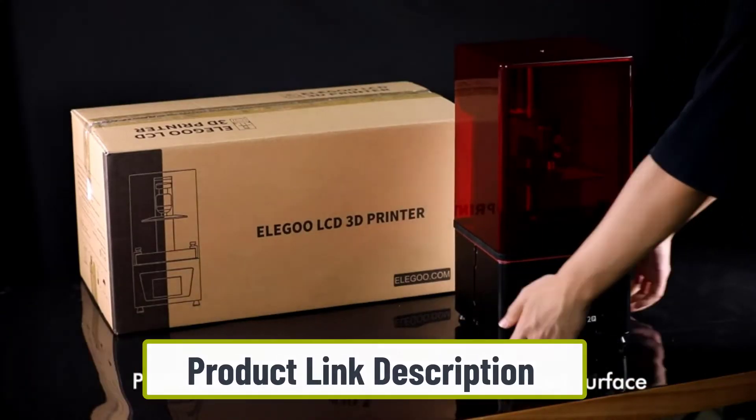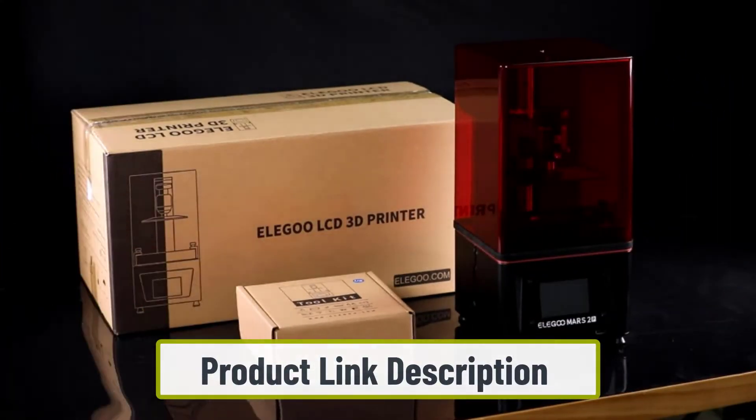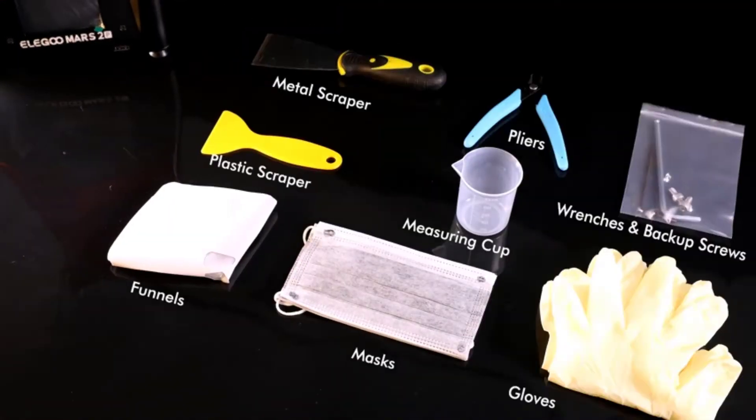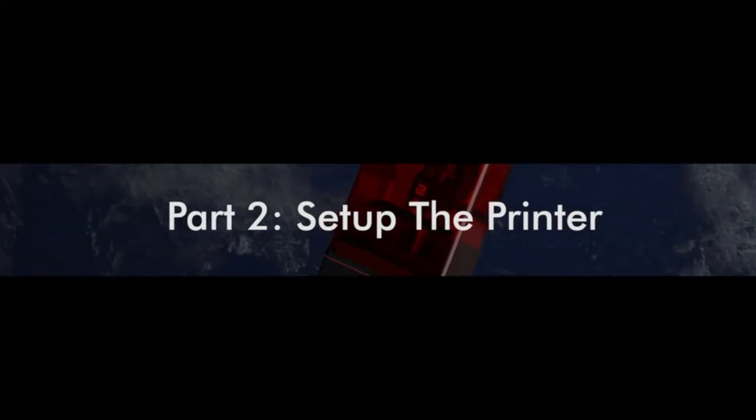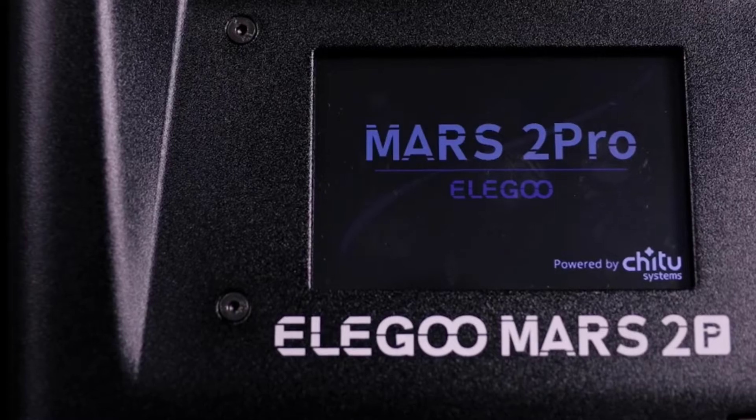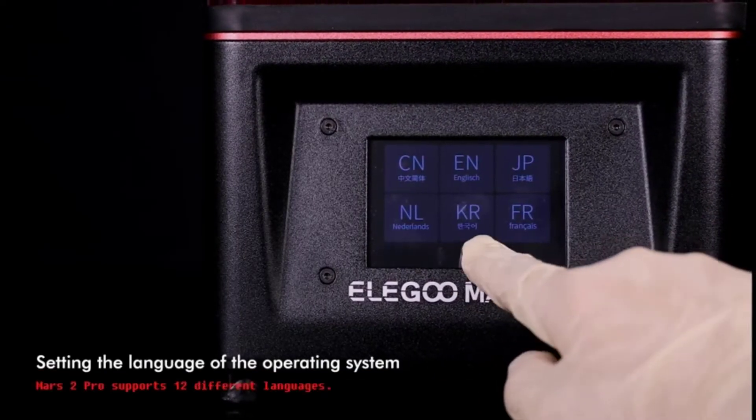Print speeds have been improved over the Elegoo Mars and Elegoo Mars Pro. Build quality is great with a carbon filter for odor reduction, quiet linear rail for silent operation, and a front-facing USB port for ease of access. Prints come out looking gorgeous.